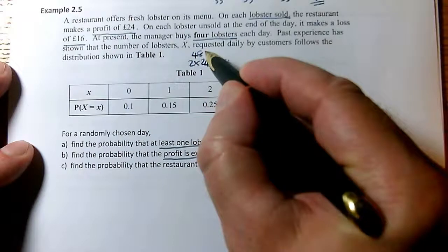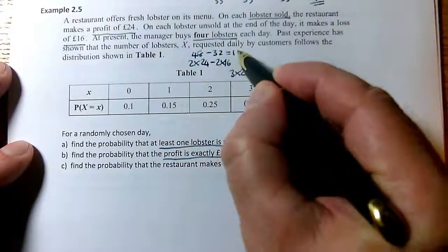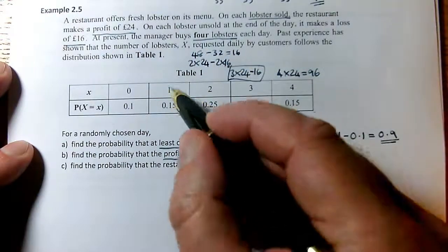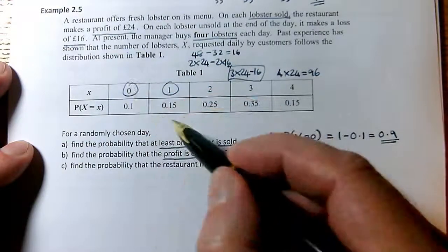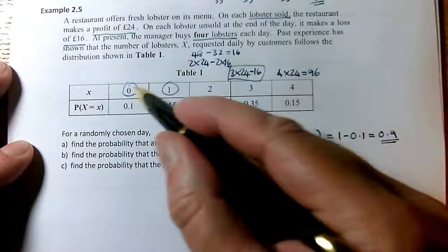And this one, 48 minus 32, I can spot that's 16. I can see this is clearly more than 16. And these two are obviously going to be less than £16. In fact, these may not be profits at all.